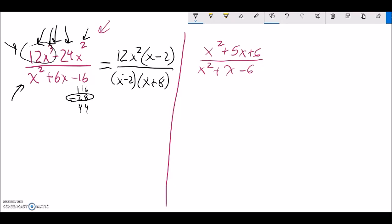And if I do that, now everything's factored. Notice this is 12 times x squared times x minus 2 over x minus 2 times x plus 8. Now I can do some dividing out. That divided by itself is 1 and nothing else divides out. So that leaves me with 12x squared over x plus 8.